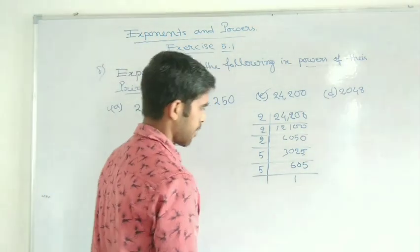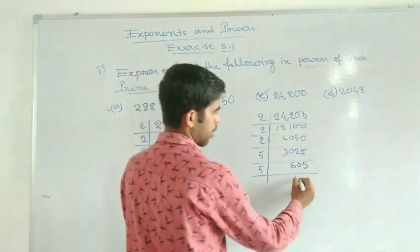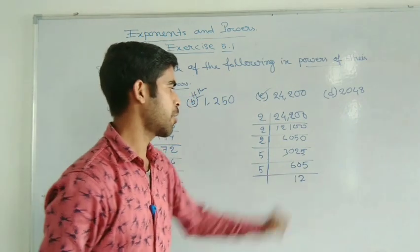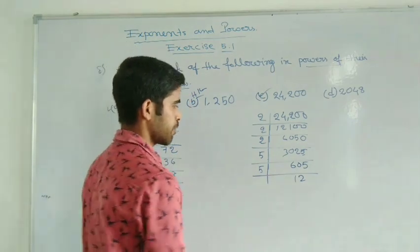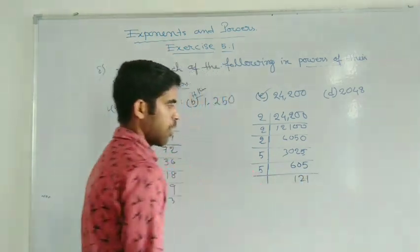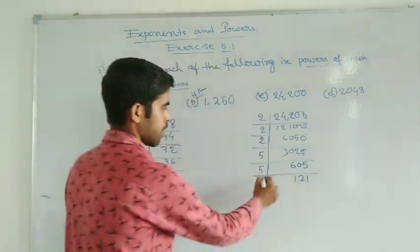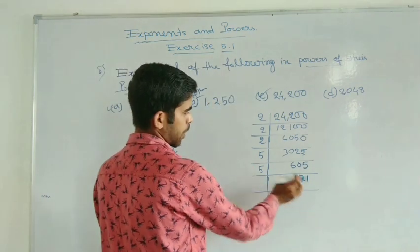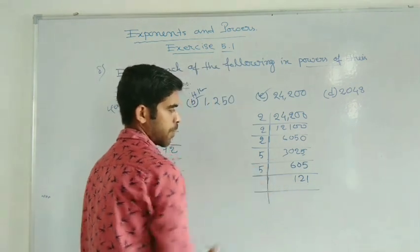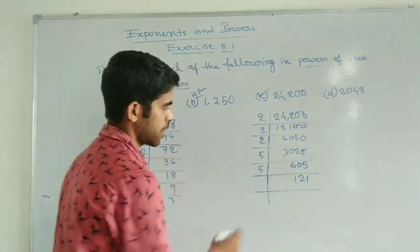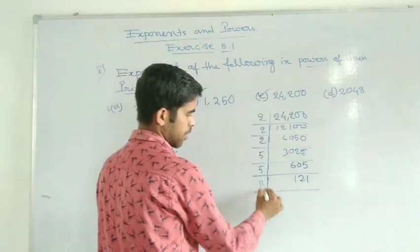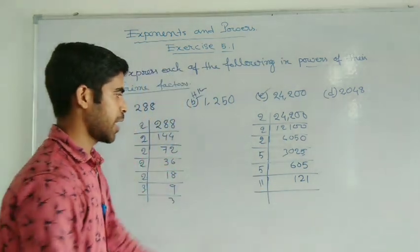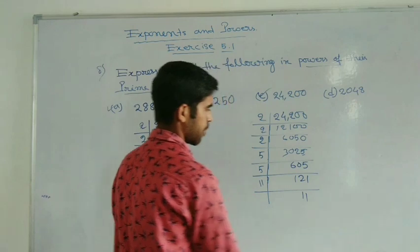Now this 10: 5 goes into 10 two times. And 5 goes into 5 one time. Now again, the digits: 2 plus 1 plus 1 equals 3. Wait — actually you can divide this one directly by 11, because 11 jumps give 121.